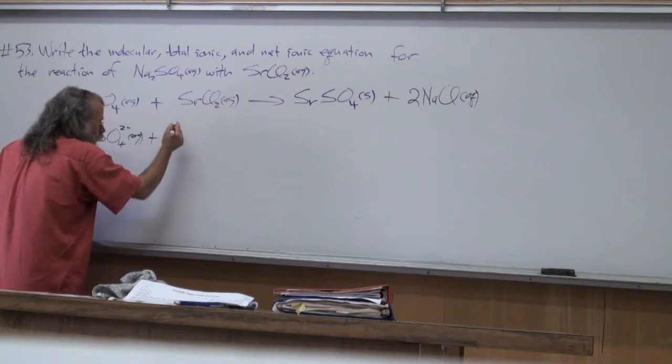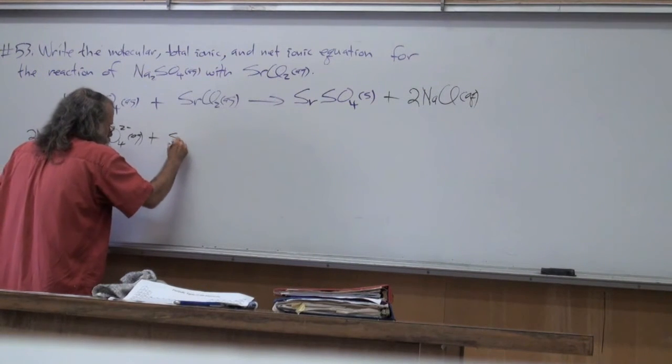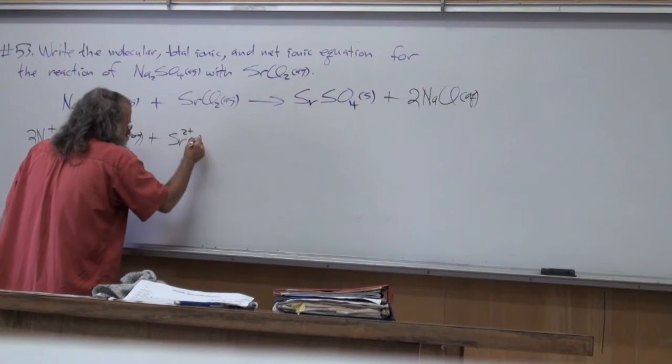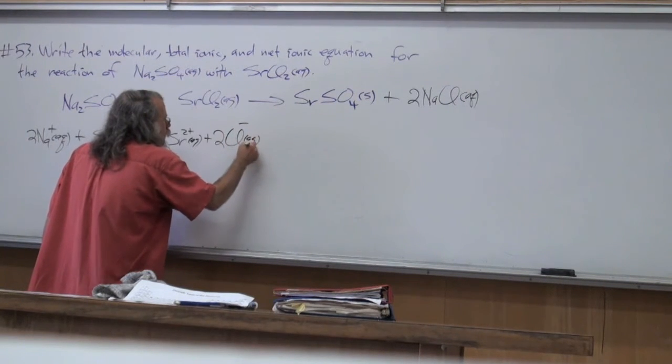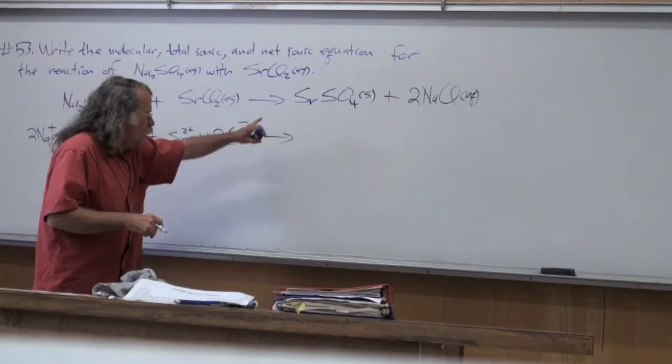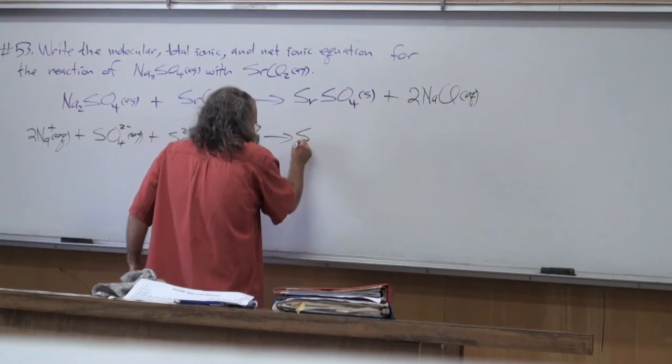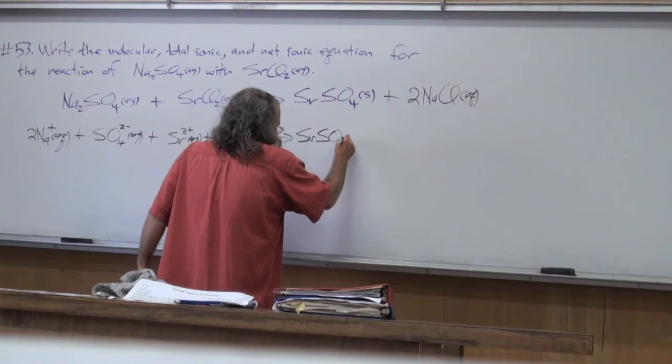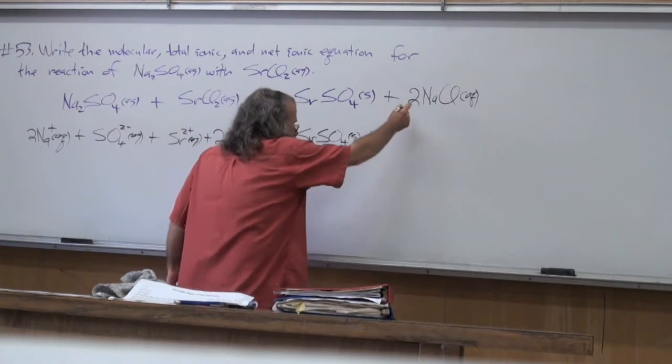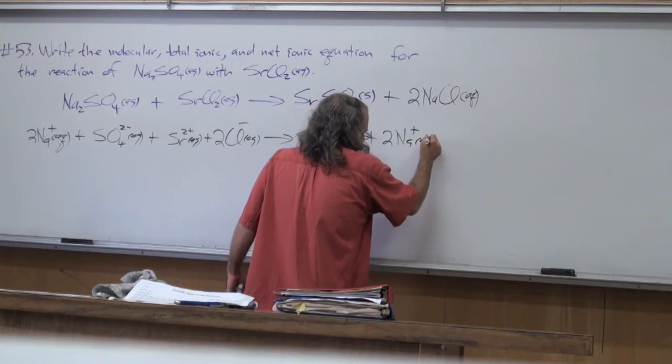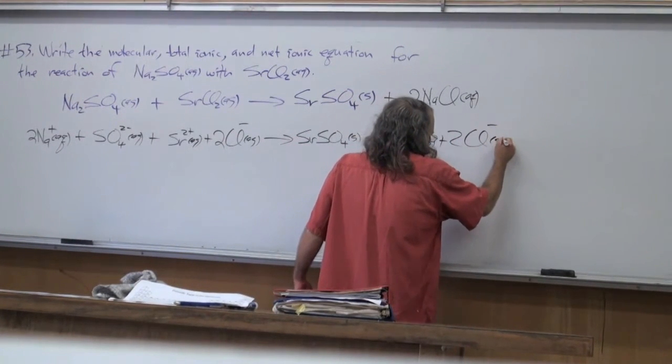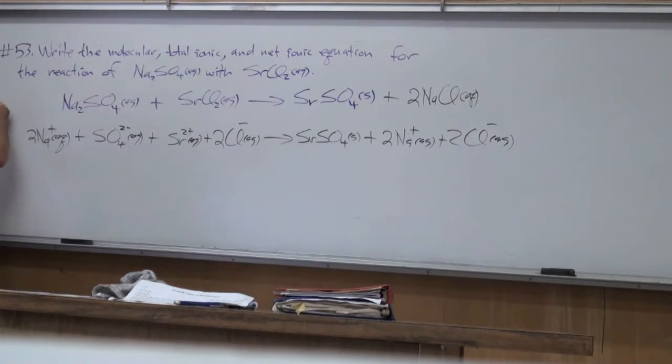Now this is aqueated. So what's the charge on strontium again? Aqueous. Plus. How many chlorides? Two chlorides. And that's going to go through. And now this is aqueated, so I just write that as it is. Strontium sulfate solid. Plus. Now is this equated? Yeah. So it's going to be two sodiums plus two chlorides. So that is the molecular. This is total ionic. And then there's the net ionic.